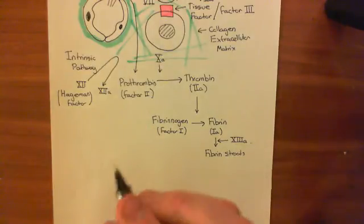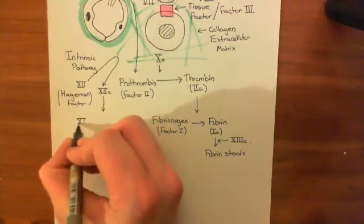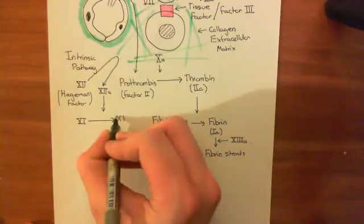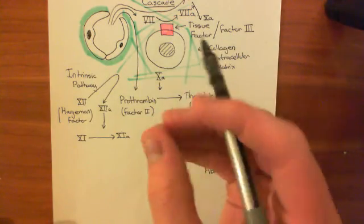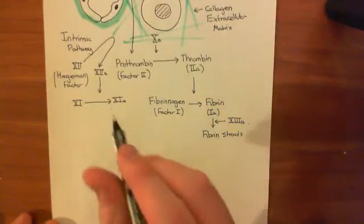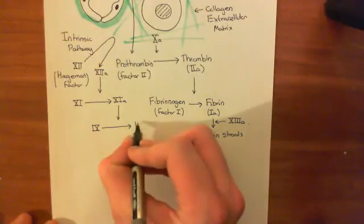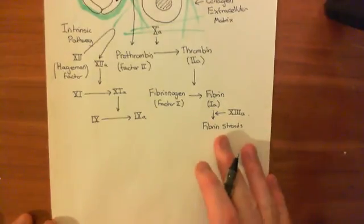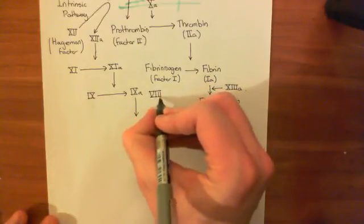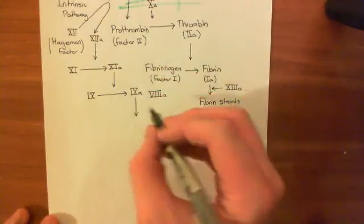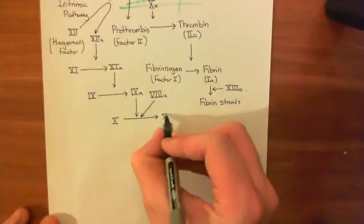Factor 12a then activates the conversion of factor 11 into factor 11a. Factor 11 comes out of the hole in the capillary and is converted by 12a into 11a. Factor 11a then activates factor 9 into factor 9a. Then factor 9a along with factor 8a — and it's essential you have both — together convert factor 10 into factor 10a. Factor 8a, like factor 12a, is also activated by exposure to collagen.